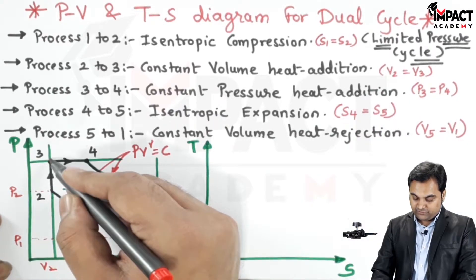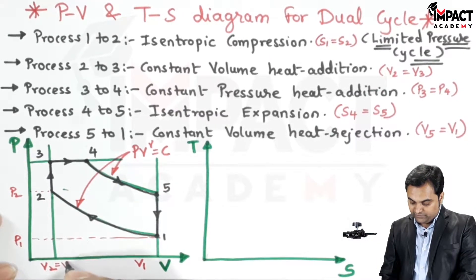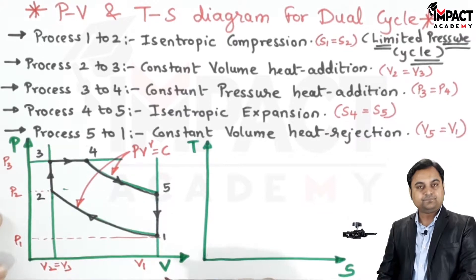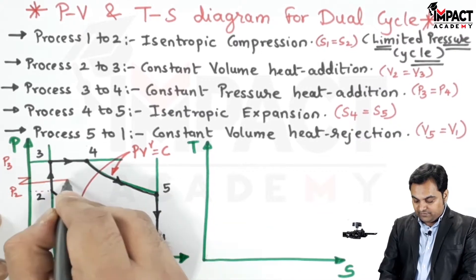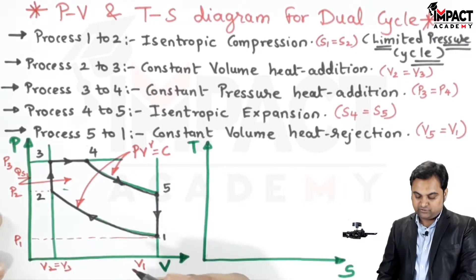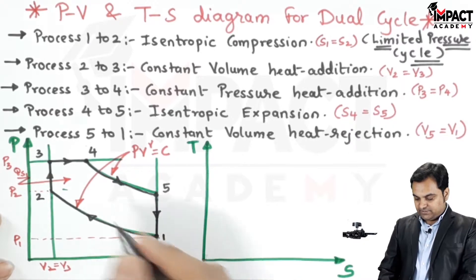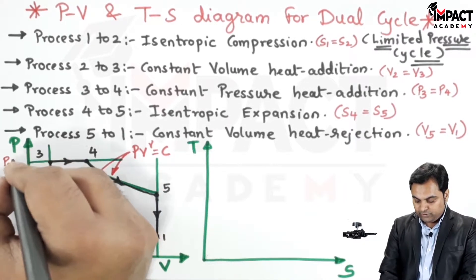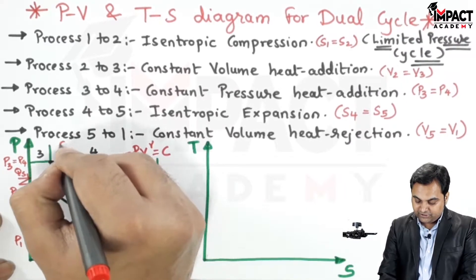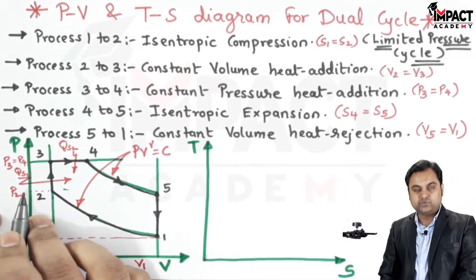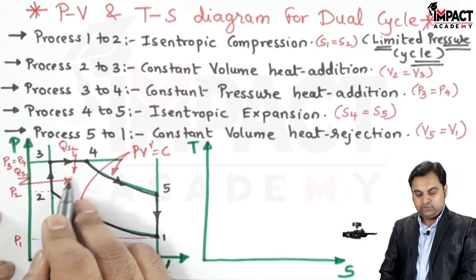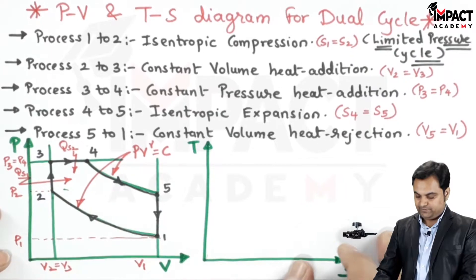During process two to three, it is constant volume heat addition, so volume remains constant: V2 is equal to V3, and the pressure increases from point 2 to point 3, giving P3. Since it is heat supplied, I'll denote it as QS1 — the first heat supplied, which is at constant volume. Next, there is another heat supplied from process three to four, where the pressure is constant: P3 is equal to P4 — constant pressure heat addition, denoted by QS2. So QS1 indicates heat addition at constant volume, QS2 the heat addition at constant pressure.